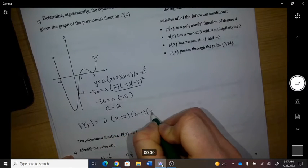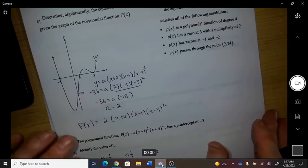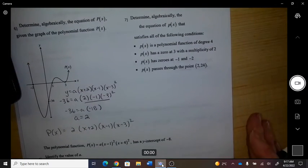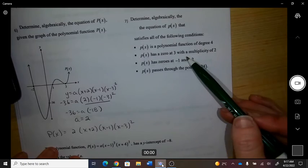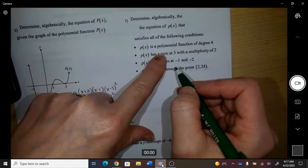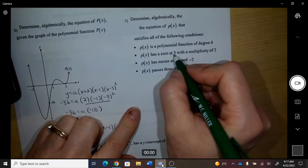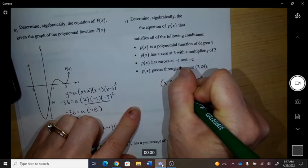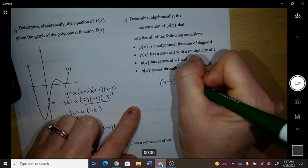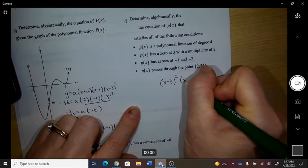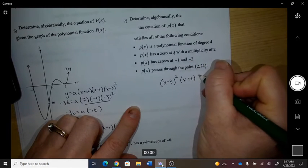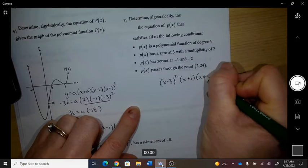We have to get an equation that satisfies this, fourth degree. It has a zero at 3, so x minus 3 is a factor with a multiplicity of 2. It has a zero at negative 1, so x plus 1, so x plus 1 and x plus 2.